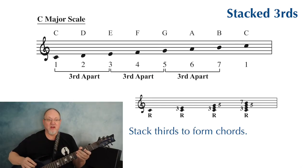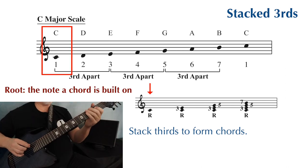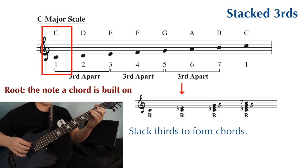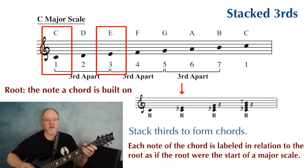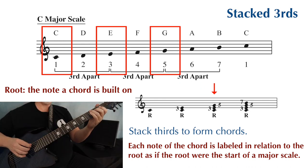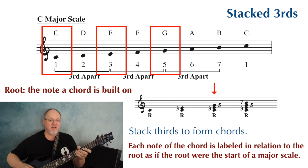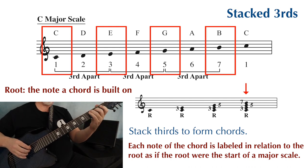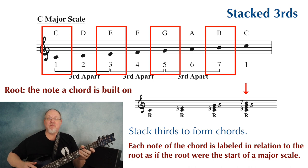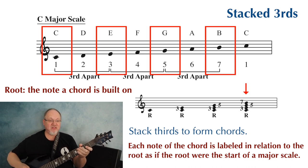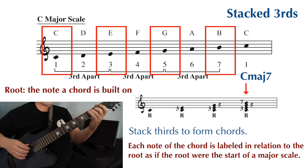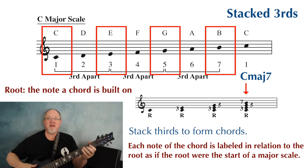We can stack these thirds up to form chords. Starting with C as the root note, we stack an E on top — now we have a root and a third. E is the third note of the C major scale. We then stack G on top, which is the fifth of the chord. Finally, we stack B on top, the seventh of the chord. What we have now is a C major seven chord with a root, third, fifth, and seventh.